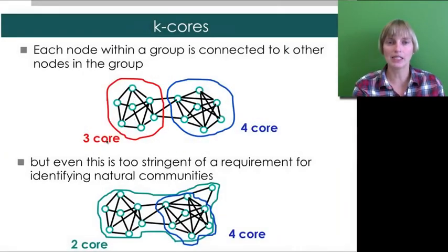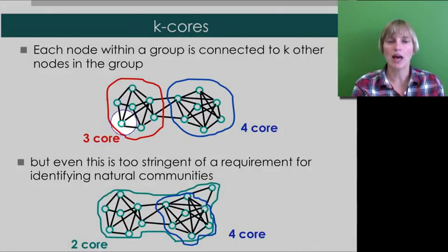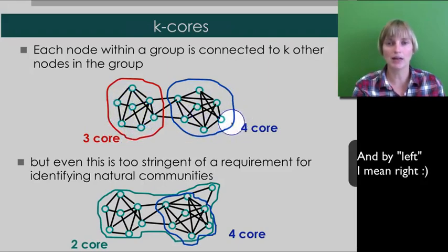Indeed, you should have found that this is a three core. So, every node on this side is connected to at least three other individuals within that same three core. And the one on the left is a four core. Because everyone's connected to at least four others.